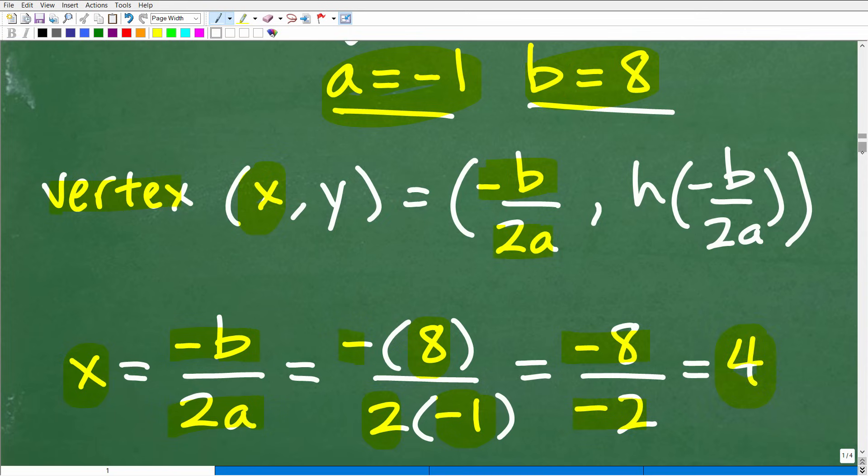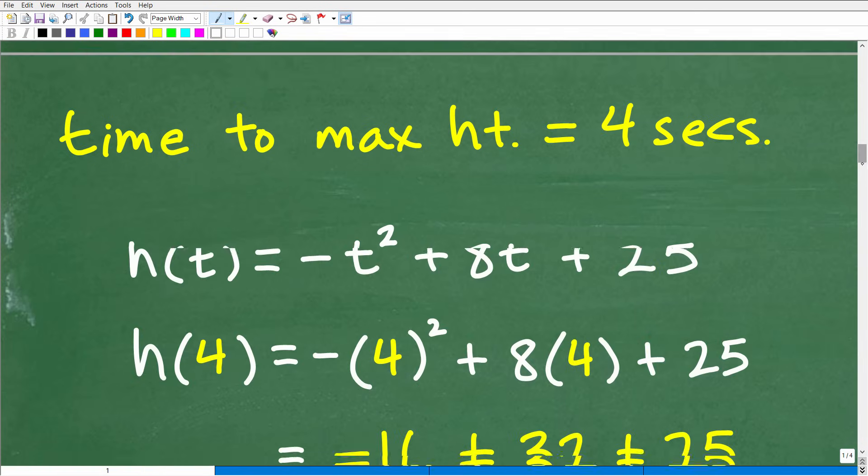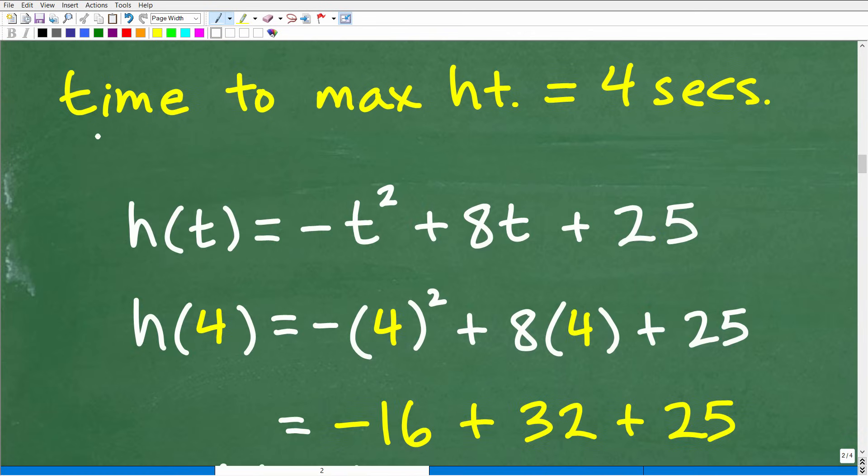So that's basically it. That's what this represents. For this x value, you need to interpret that. That's the t coordinate in our vertex, which represents time. So the time to reach the maximum point, i.e. the vertex, is four seconds. So that is the answer.